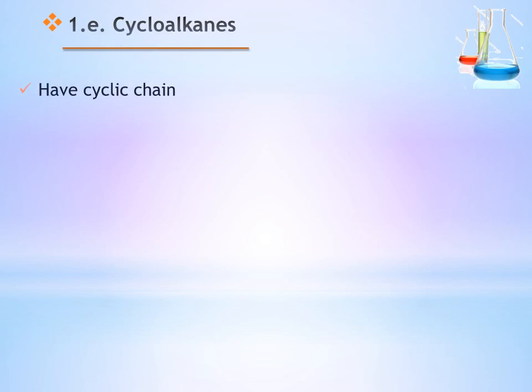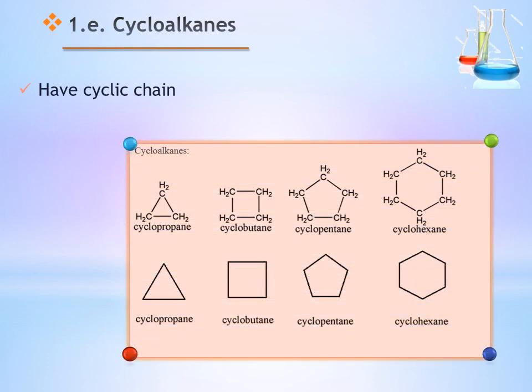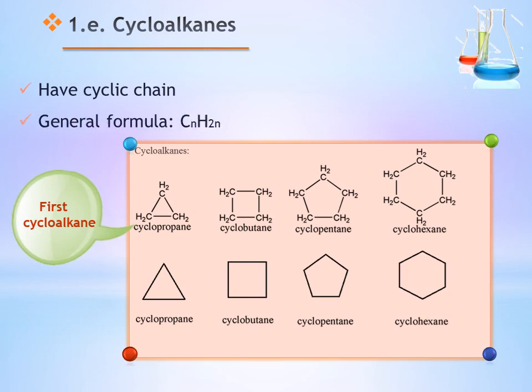Cycloalkanes have a cyclic chain — they are not open chain. There are many cycloalkanes, starting from cyclopropane to cyclohexane. The first cycloalkane starts with carbon number 3, having three carbons. The general molecular formula of cycloalkanes is CnH2n.